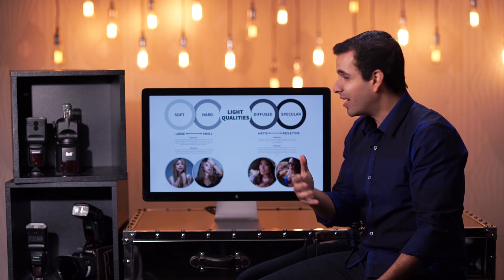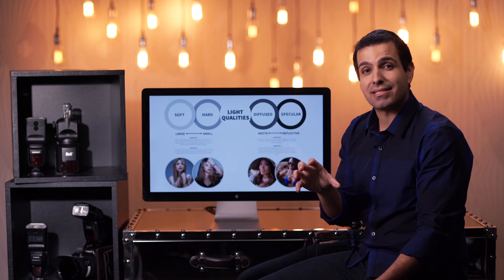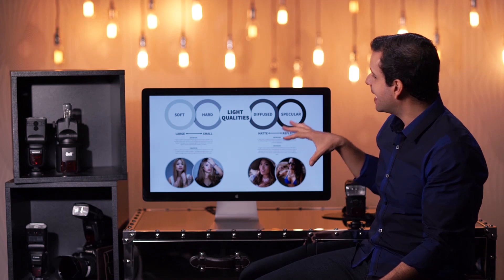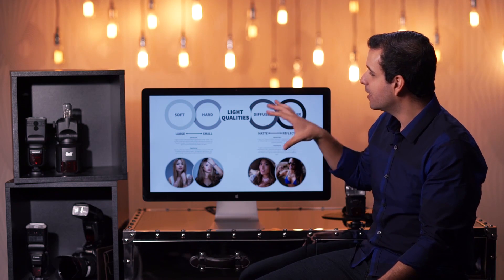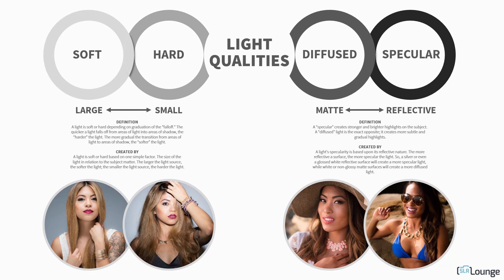The size of the specular light in relation to the subject also comes into play. A silver specular modifier placed close to my face will still create a gradual highlight-to-shadow transition, but the highlights and shadows will be much more contrasty and prominent. To summarize: softness and hardness — the graduation from shadow to light — is all about size. Diffusion versus specularity is all about whether the surface is matte or reflective.